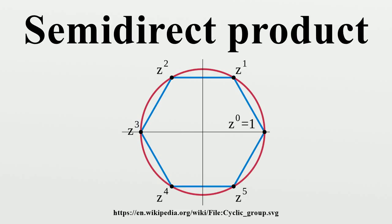The direct product of two groups N and H can be thought of as the semi-direct product of N and H with respect to φ_h = id_N for all h in H. Note that in a direct product, the order of the factors is not important, since N × H is isomorphic to H × N.